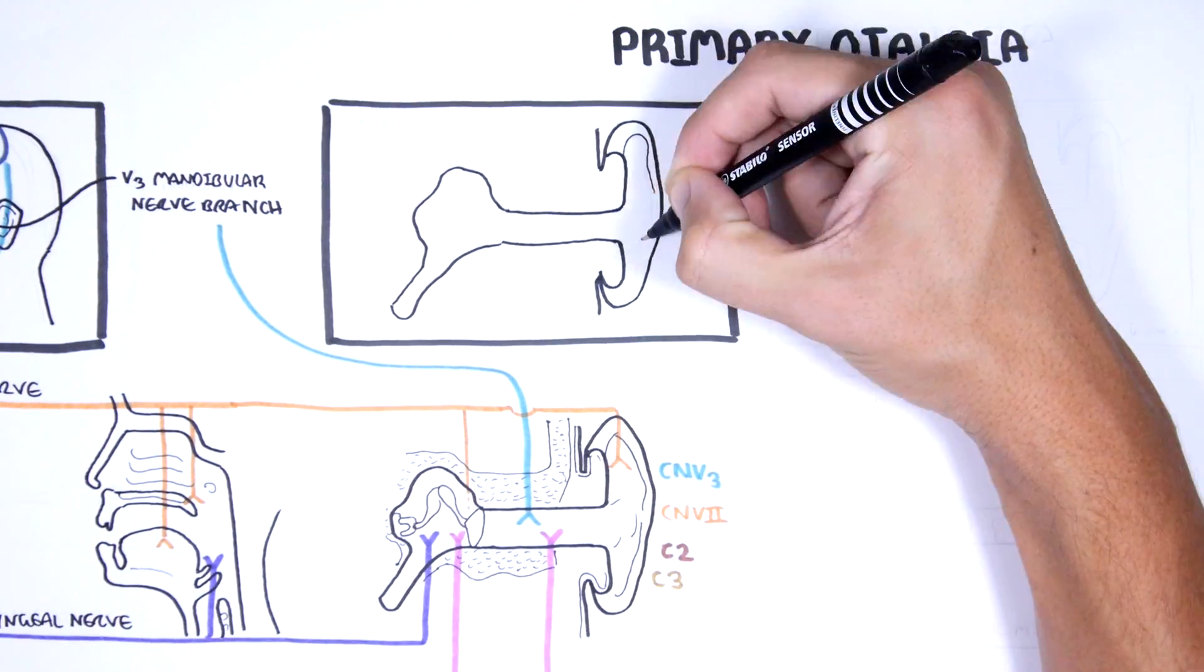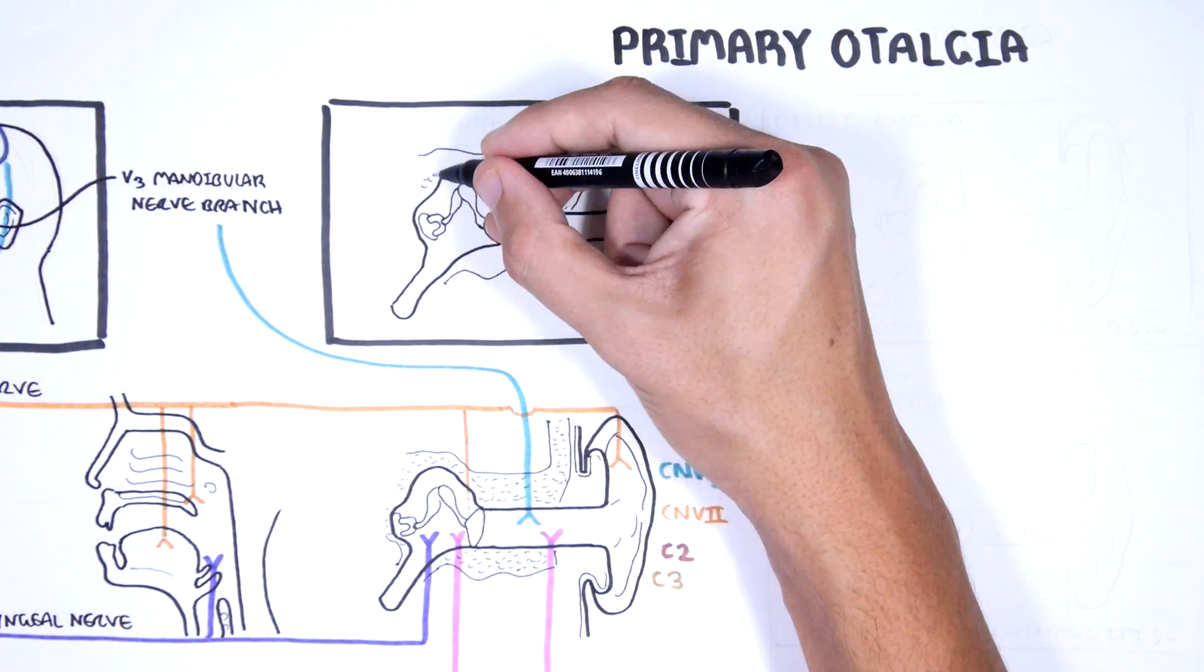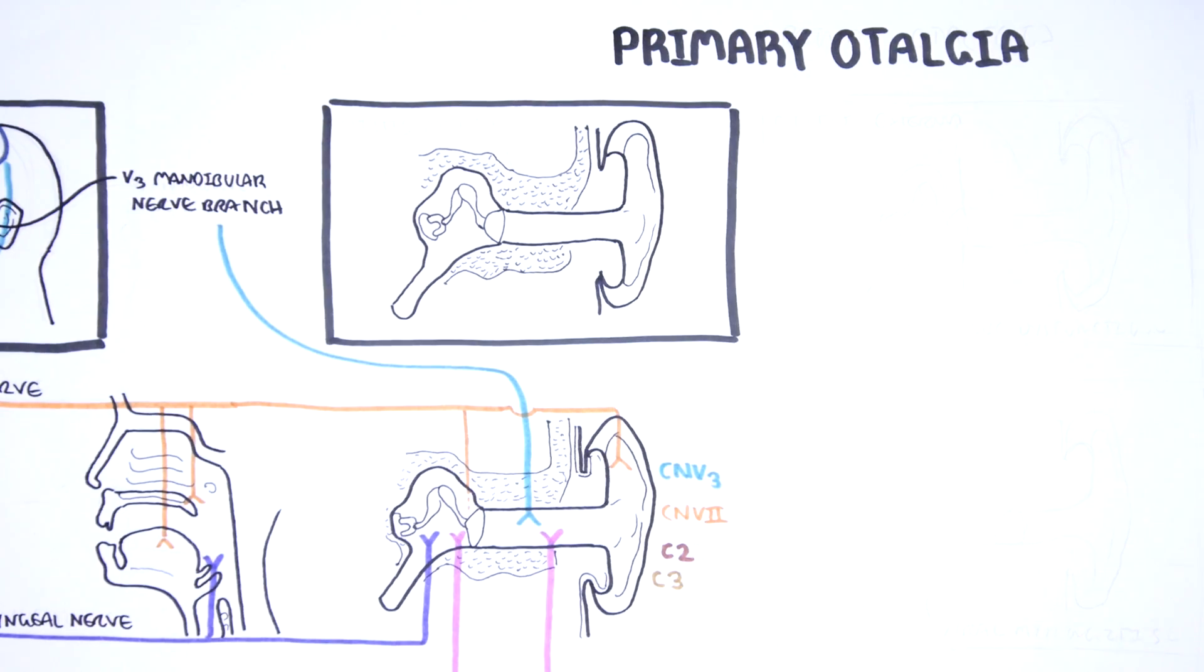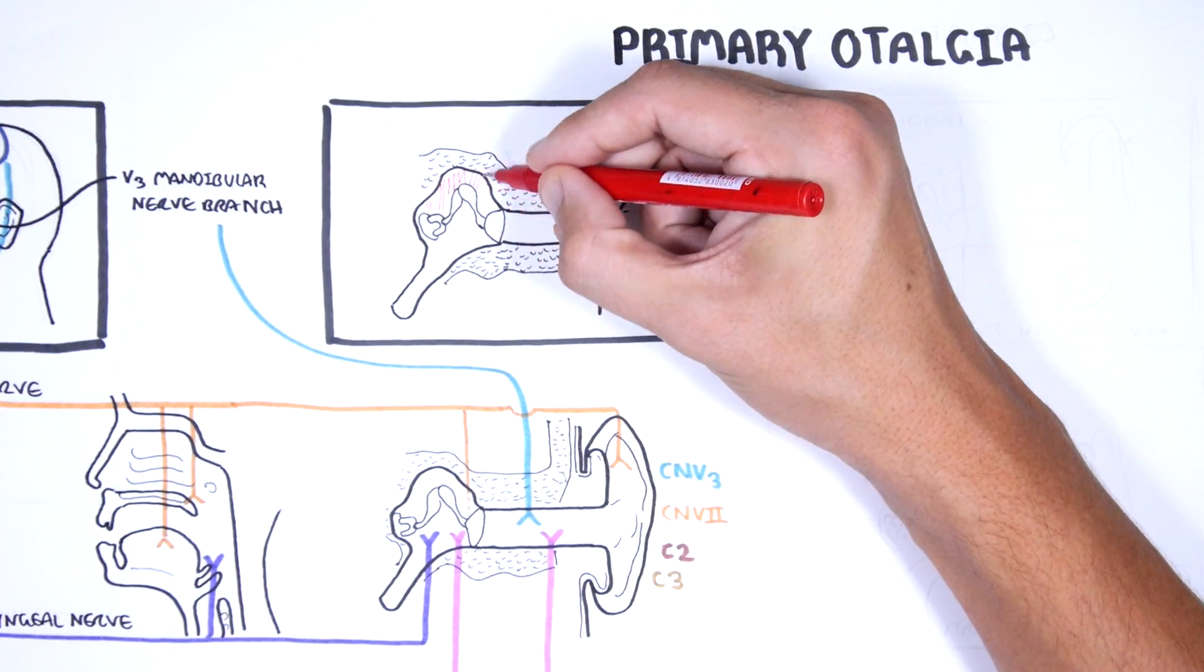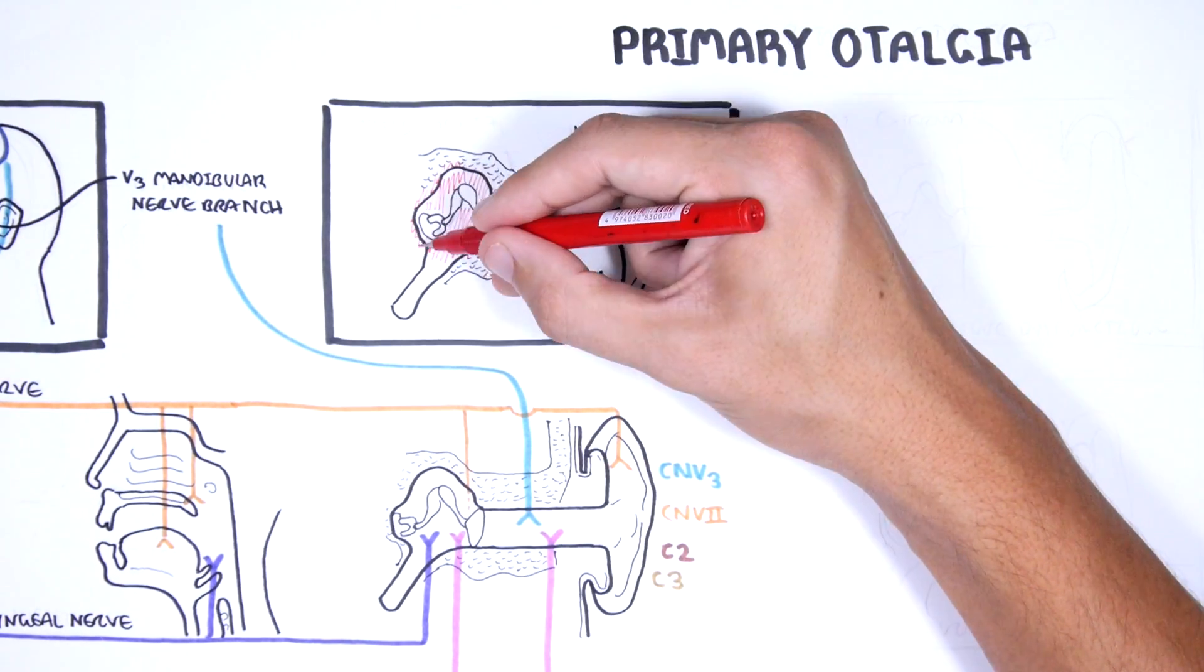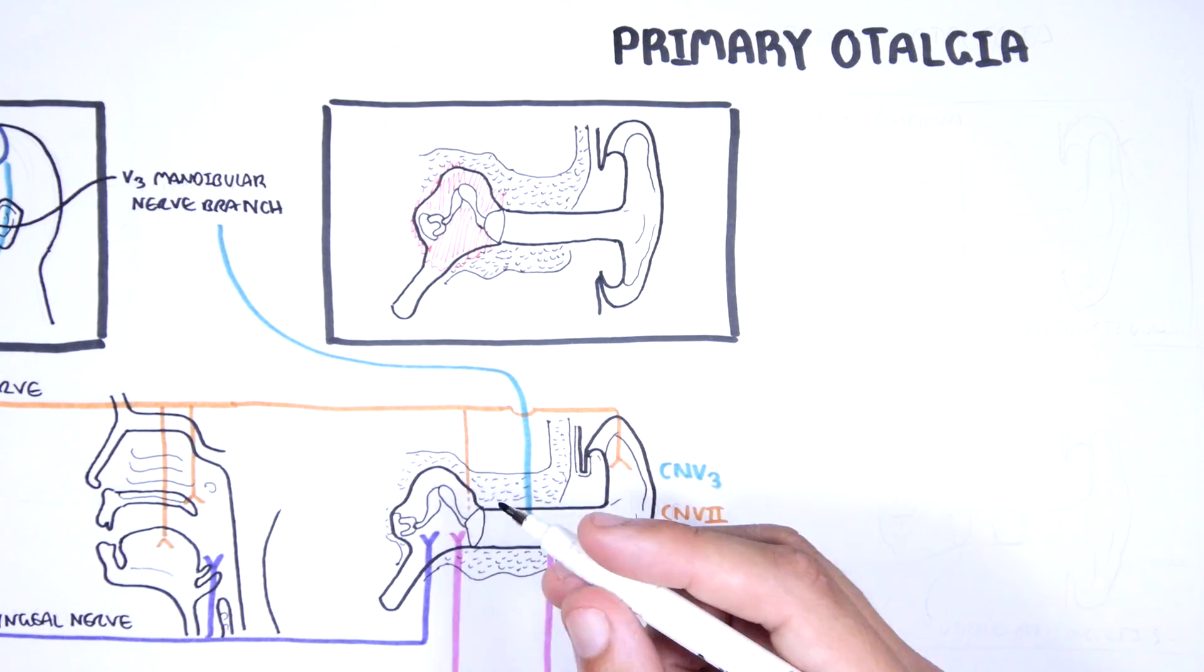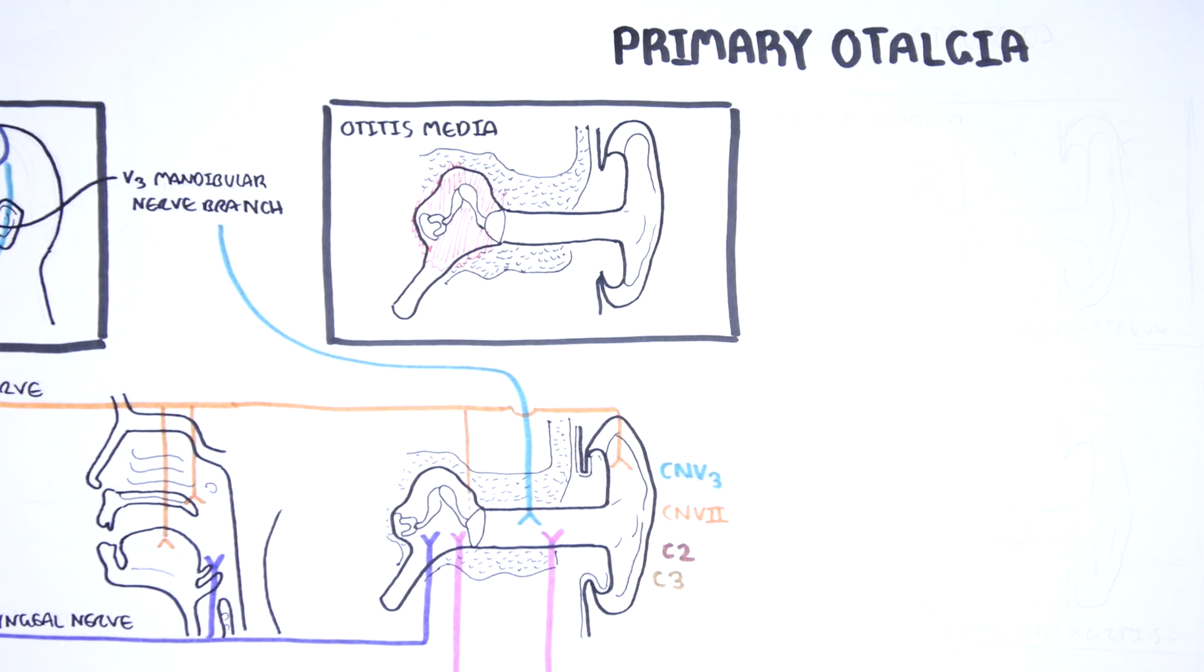Causes of primary otalgia include acute otitis media, which is an infection of the middle ear caused by bacteria, and usually preceded by a viral infection. Pain is felt deep within the ear, and children complain of nonspecific symptoms such as irritability, poor sleep, and feeding.